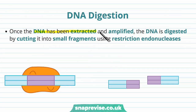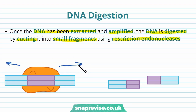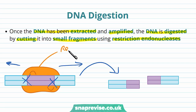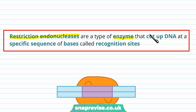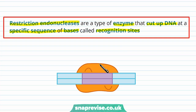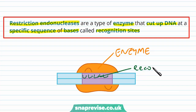Once the DNA has been extracted and amplified with PCR, the DNA is then digested by cutting it into smaller fragments using restriction endonucleases. DNA is a very long molecule, and it would be inefficient to work the reaction on one massive molecule, so we cut it up into sections to make it more manageable. Restriction endonucleases are a type of enzyme that cut up DNA at a specific sequence of bases known as recognition sites. The enzyme's active site recognises particular sequences of nucleotides, and this sequence is the recognition site. The recognition site comes into the enzyme, which then digests the DNA into smaller, more manageable fragments.